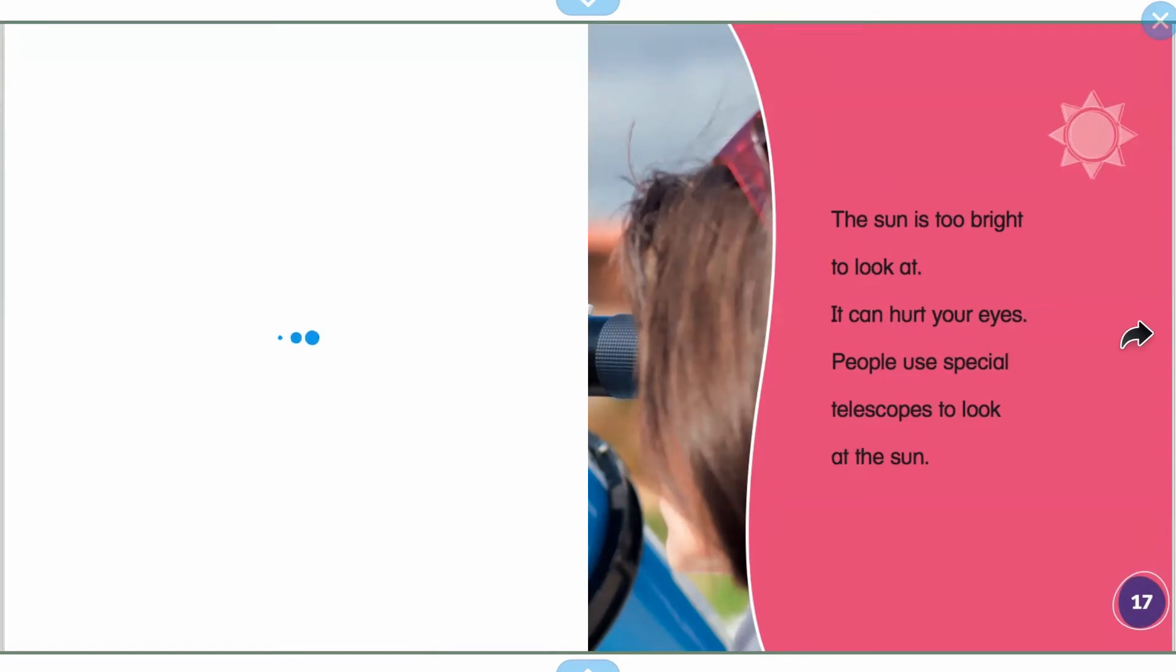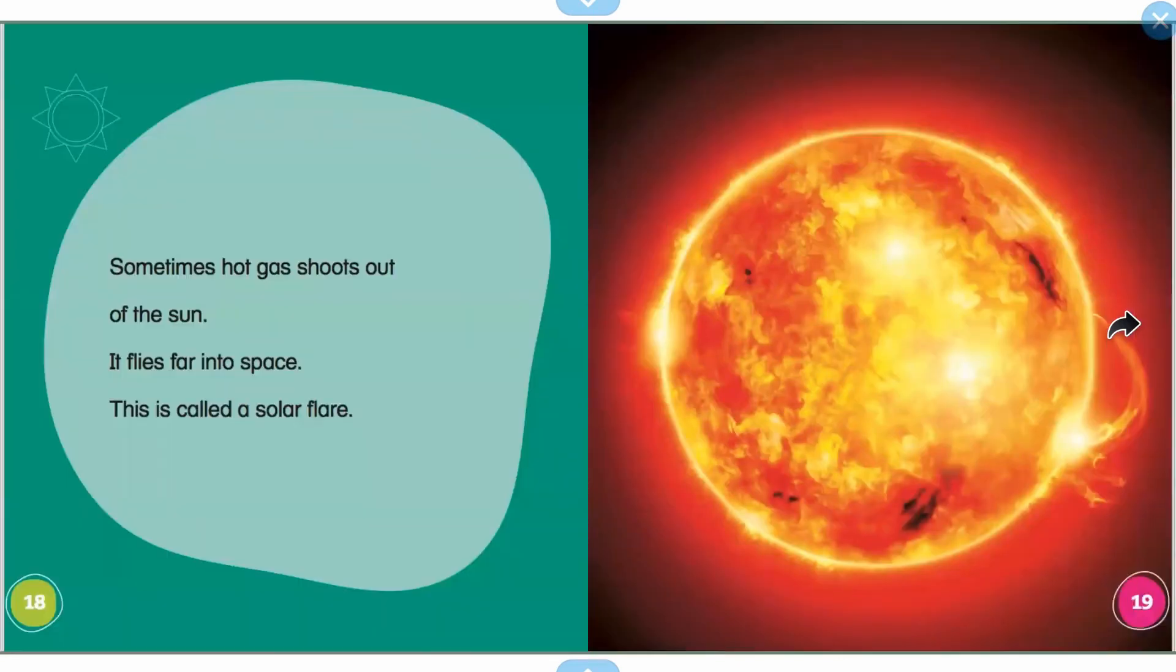So a telescope is a tool that allows us to see things that are far away like stars, the moon, maybe even other planets. And there's special ones that you have to use if you're looking at the sun so that way the sun does not hurt your eyes. So remember, a telescope is a tool that scientists use to look at things far away.